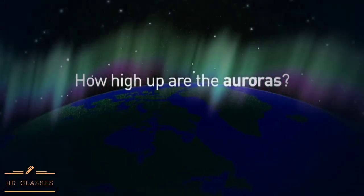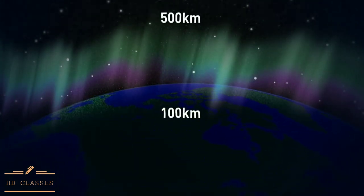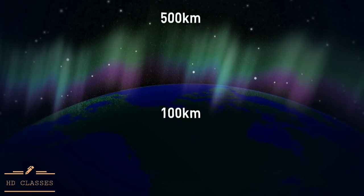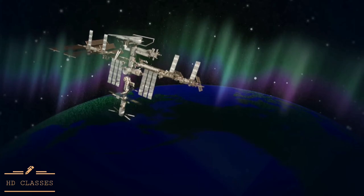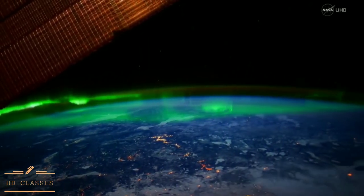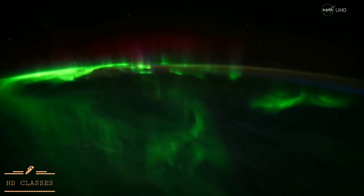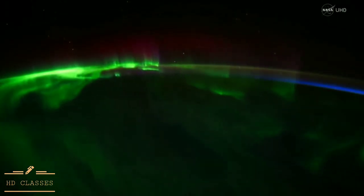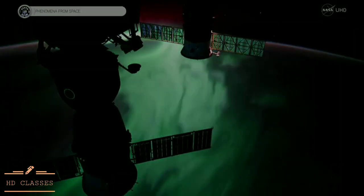How high up are the auroras? Aurora are between 100 and 500 kilometers above the surface of the Earth. How high is that? The International Space Station orbits the Earth at about 400 kilometers above the surface. Astronauts on the space station often get a side view of the aurora. That's still cool too, because the side view of an aurora can give you an unbelievable show. It shows you how tall an aurora can be.